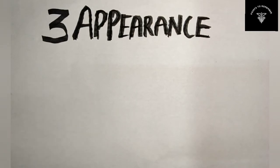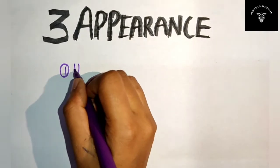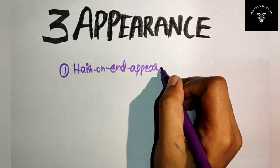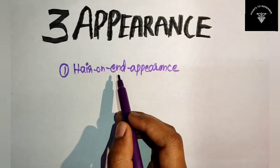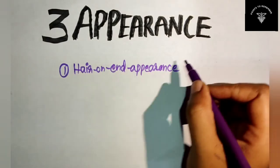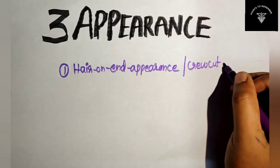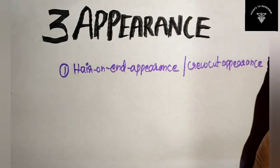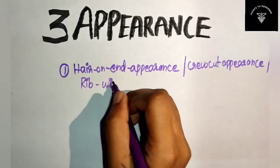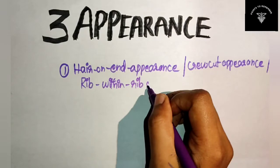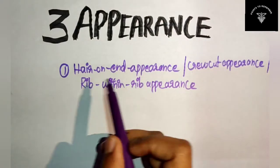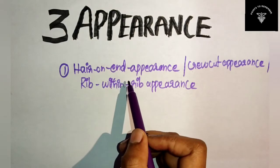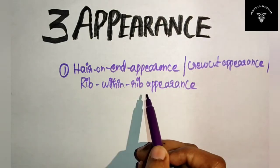The first one is hair on end appearance. It is also known as crew cut appearance or rib within a rib appearance. These are the other names for this appearance, and you have to know all three names: hair on end appearance, crew cut appearance, and rib within a rib appearance.